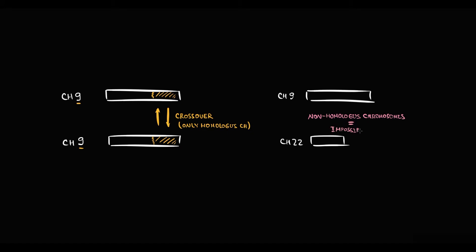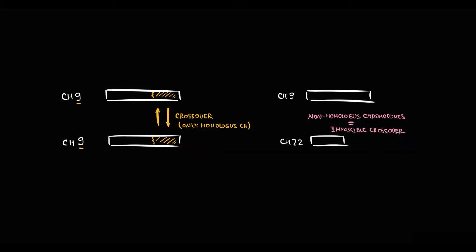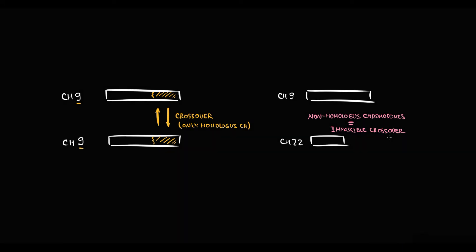But sometimes a mutation can disrupt normal metabolism, and this can cause a pathological crossover between non-homologous chromosomes. And exactly this happens in chronic myeloid leukemia.